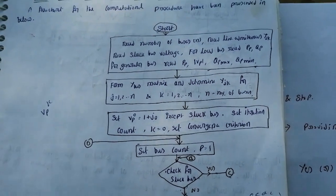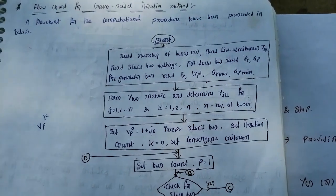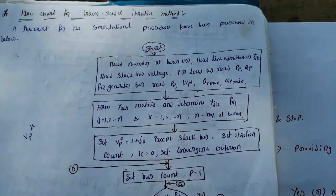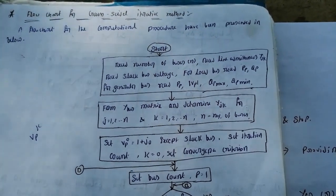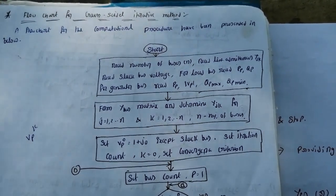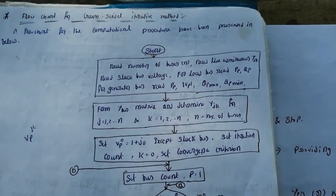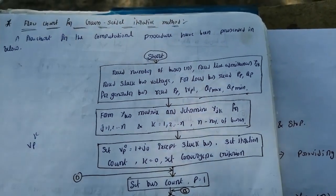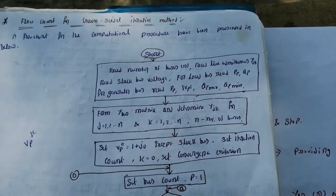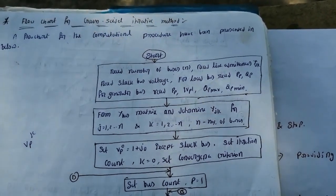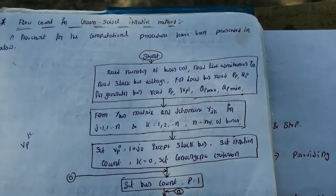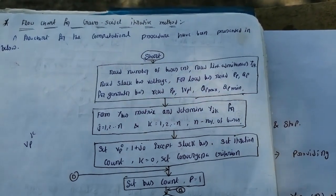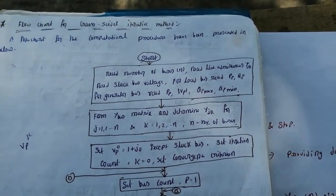So in the flowchart we read: number of buses, Y-admittance matrix, slack bus voltage, load bus data, and real power P. For the load bus the known values are real power and reactive power. For the generator bus, the known values are real power, voltage, and the reactive power Q within its limits — between the minimum and maximum value of reactive power.